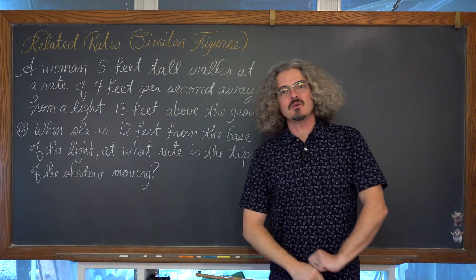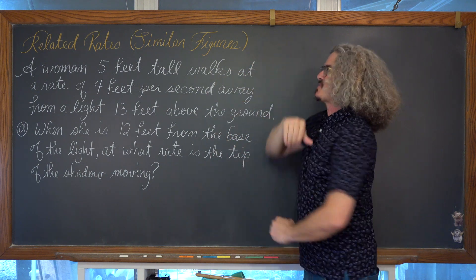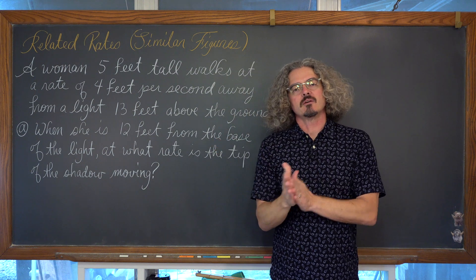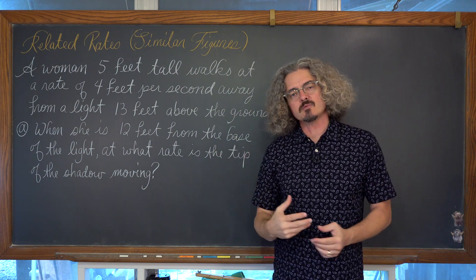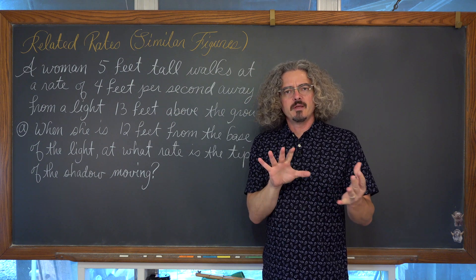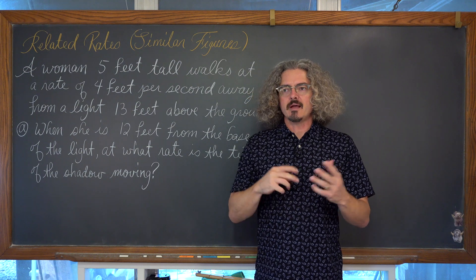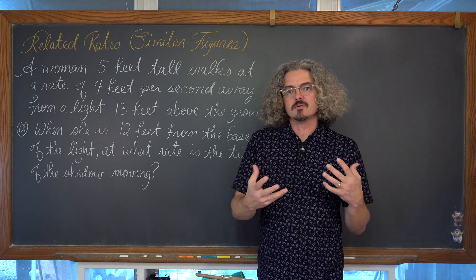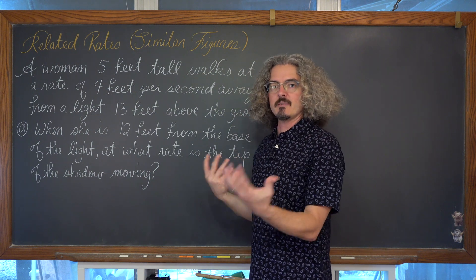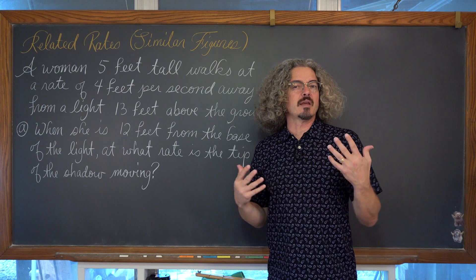In this video we're going to do two examples based off the same story dealing with related rates. This is the third video in our series involving related rates. We've done a video that works with related rates when discussing area and volume. We did a second video where we had problems dealing with right triangles, sometimes using the Pythagorean theorem, sometimes involving a trigonometric function.